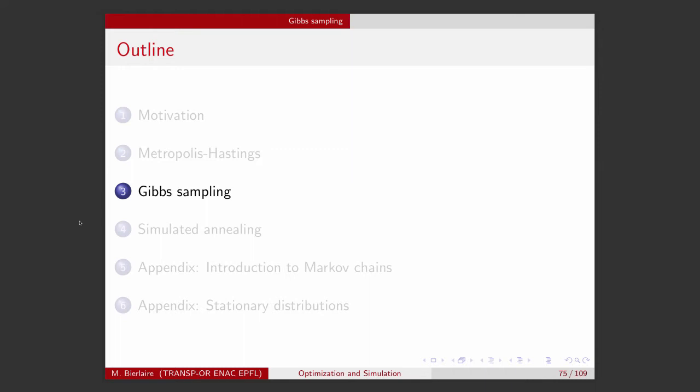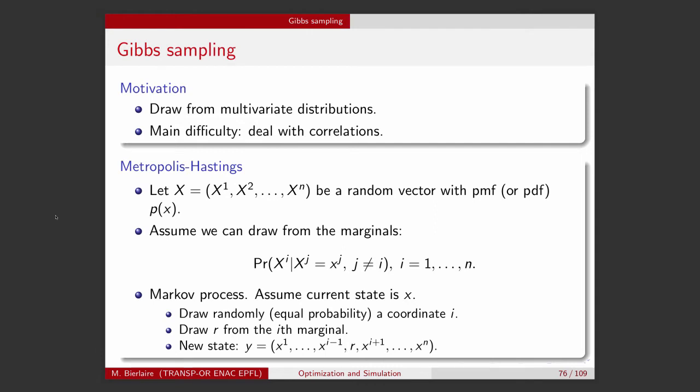Now I would like to apply it to another problem, which is drawing from multivariate probability distributions. And the outcome will be an algorithm called Gibbs sampling. When you want to draw from multivariate distributions, the main difficulty is to deal with the correlations among the different dimensions. So it's easy to draw from independent random variables. It's quite difficult to draw from correlated random variables.